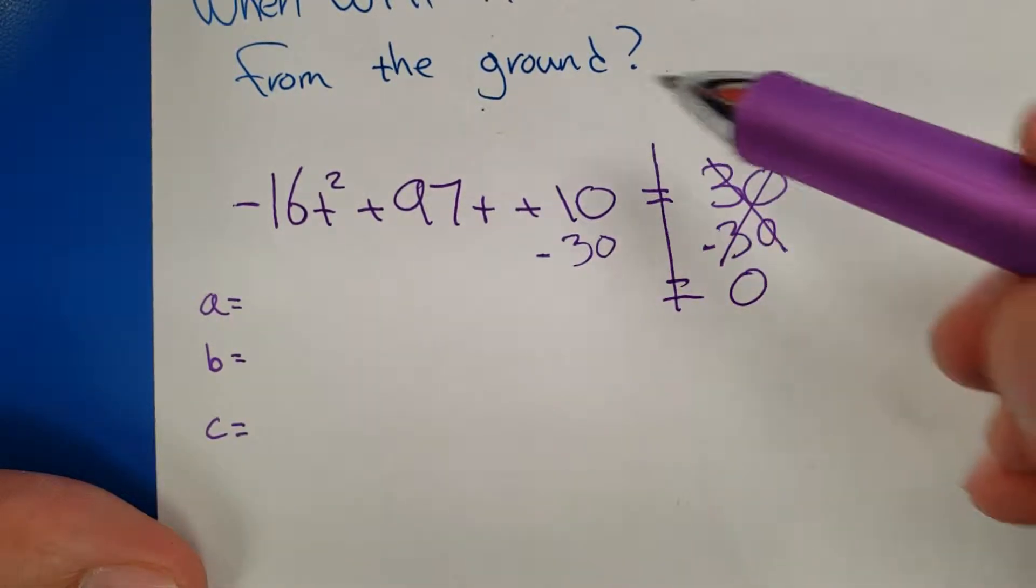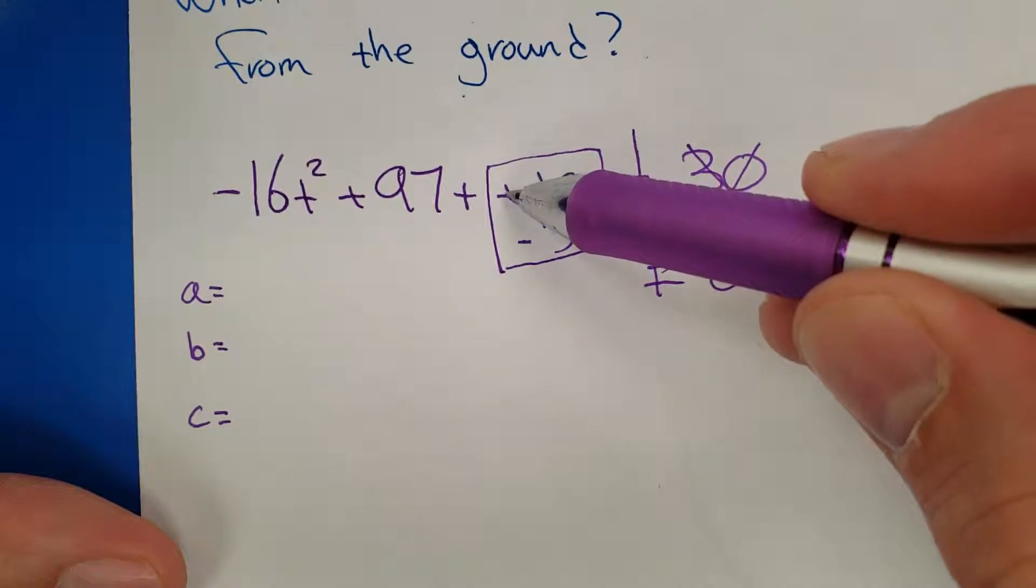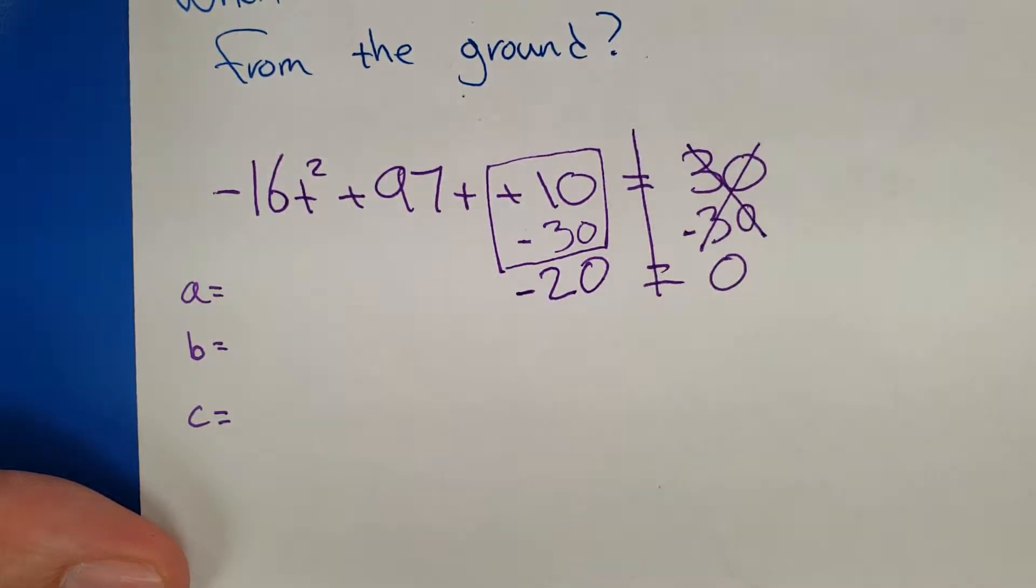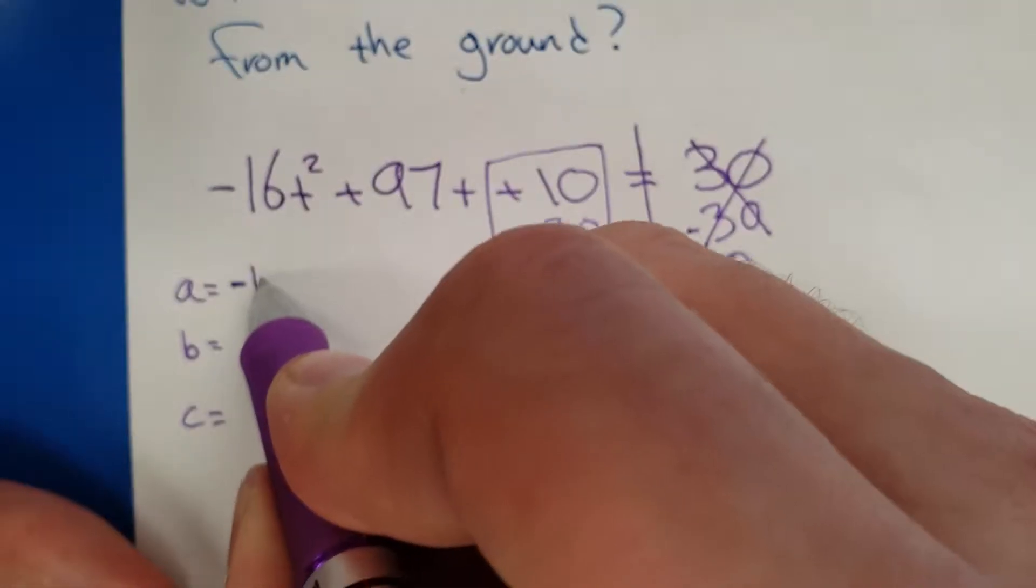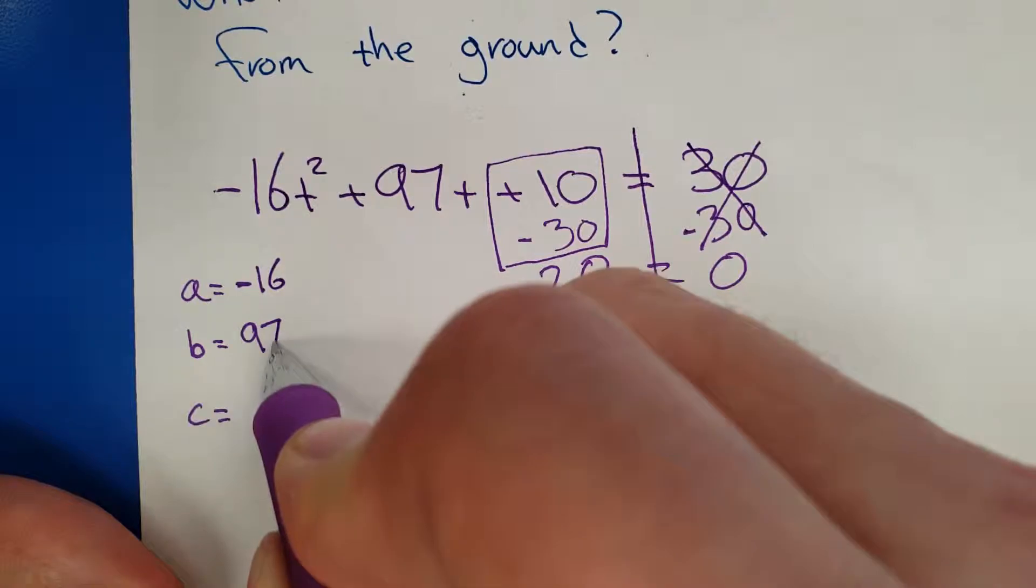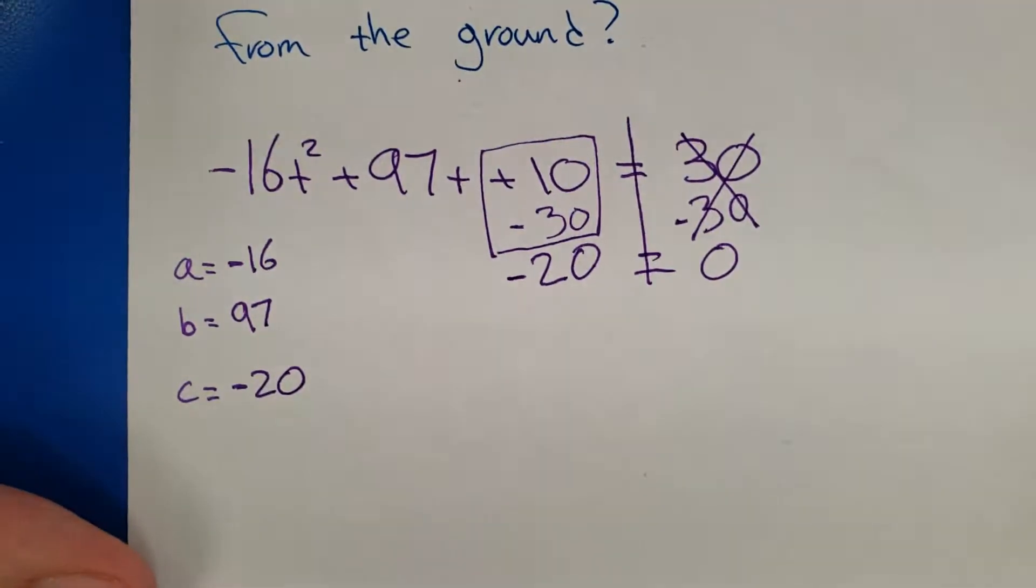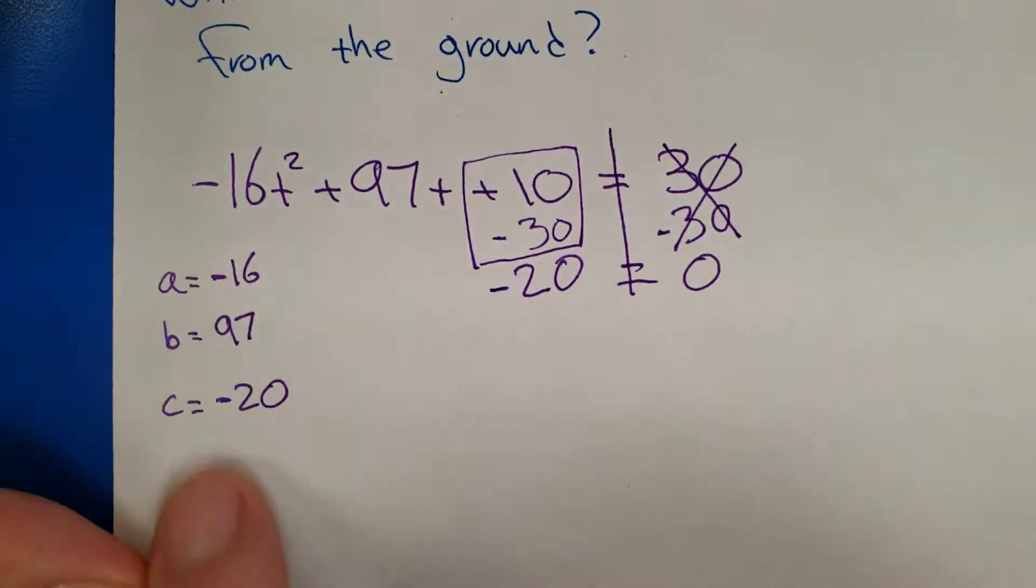It's now equal to 0. I'm too lazy to rewrite the whole thing. The only thing that changes is your C value. So plus 10 minus 30 is going to be a negative 20. So now we have a new C value. So if I go over here to A value, B value, C value, I now have a new C value.